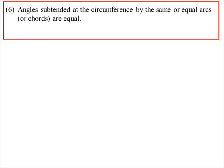So angles subtended at the circumference by the same or equal arcs, I'll explain the difference between the two in a sec, are equal. And again, you could exchange the word chords with arcs because when we're subtending, remember, we're just going from two points to a third point. So the endpoints of the arc are the same as the endpoints of the chord.